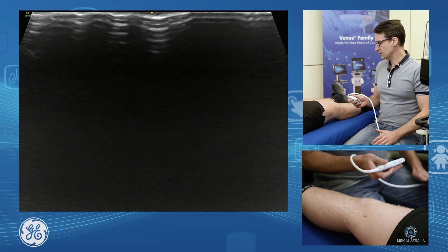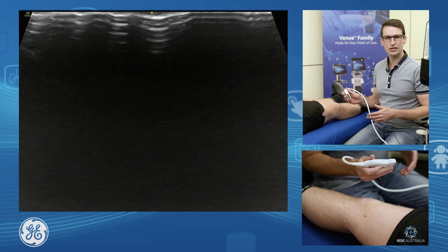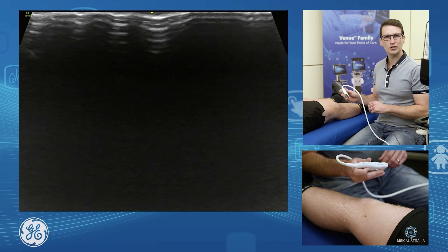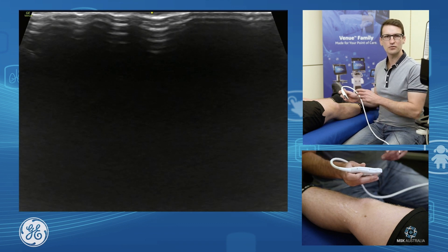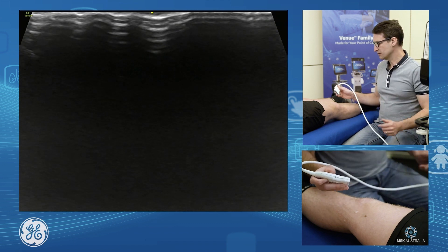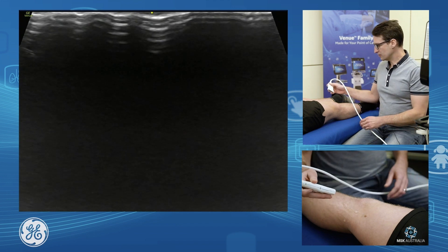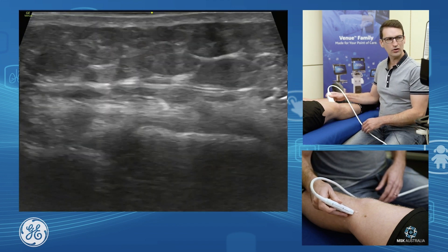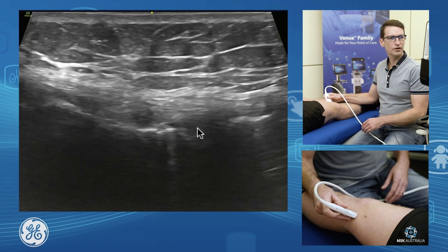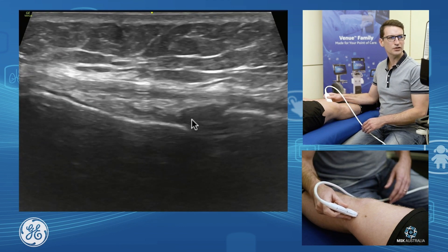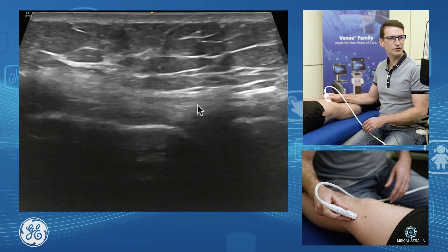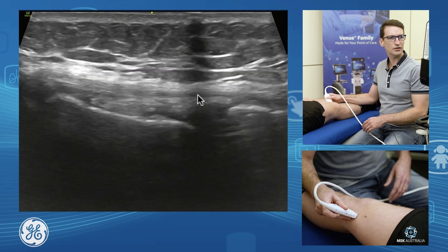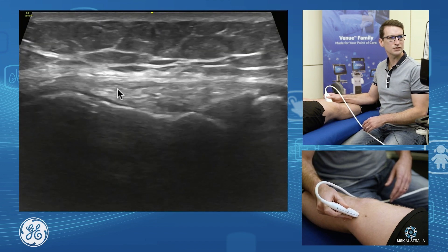I'm going to discuss the medial knee and our medial collateral ligament. The medial collateral ligament runs from our medial femoral condyle down to our proximal tibia. To assess it, we go in the coronal plane onto the edge of the knee joint, find our knee joint, and as we scan towards and away from the bed we will see our ligament — here it is here.